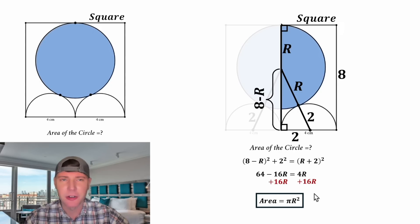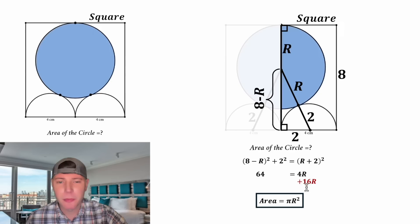From here, let's add 16 big R to both sides. On the left hand side, these will cancel each other out. And four big R plus 16 big R is 20 big R. So we have 64 is equal to 20 big R. From here, let's divide both sides by 20. And that'll leave us with big R is equal to 3.2.